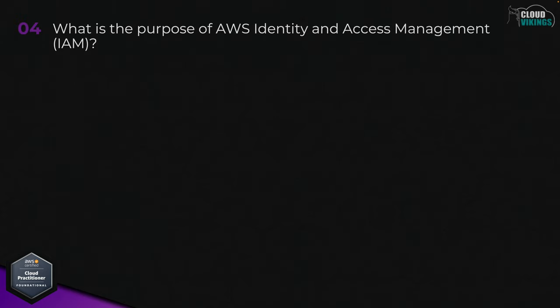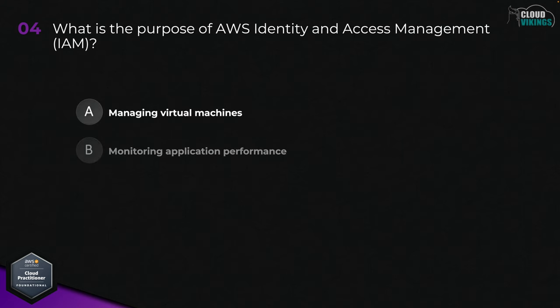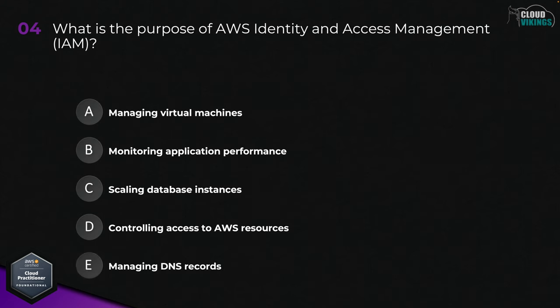Question four: what is the purpose of AWS Identity and Access Management, IAM? Options are: A, managing virtual machines; B, monitoring application performance; C, scaling database instances; D, controlling access to AWS resources; or E, managing DNS records. The correct answer here would be D, controlling access to AWS resources.